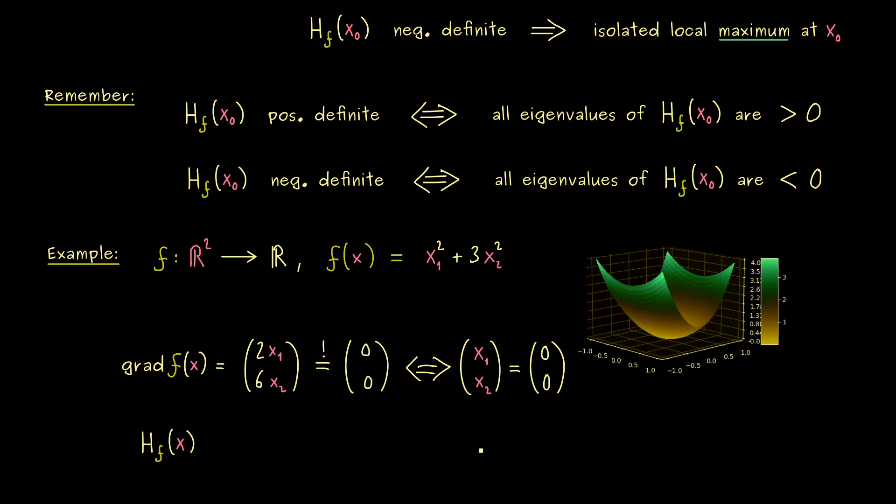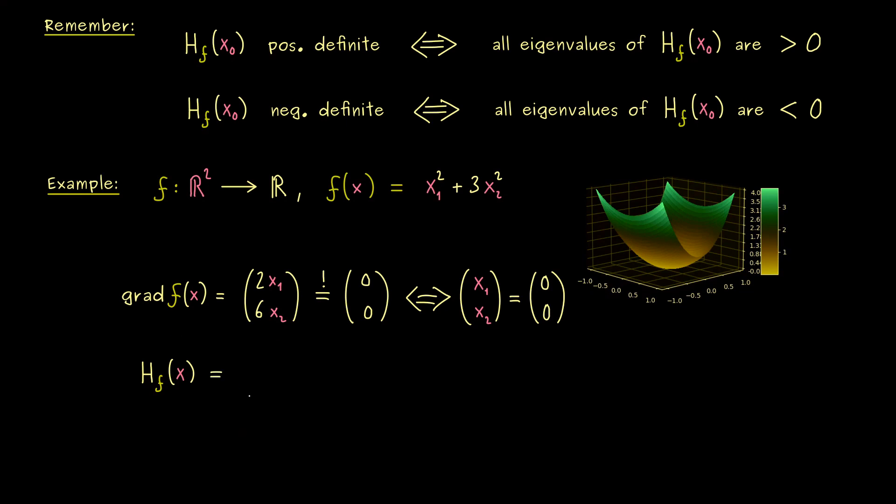And now exactly for this critical point we will examine the Hessian. Of course we know it's a 2 times 2 matrix where we have the second order partial derivatives in it. More precisely it means in the first column we have the partial derivative with respect to x₁ of the gradient and in the second column we have the partial derivative with respect to x₂ of the gradient. Therefore it's not hard at all to calculate it. First we have 2 then 0 and then 0 and 6. So we see we have a diagonal matrix here. And for a diagonal matrix you should know that all the eigenvalues are exactly on the diagonal.